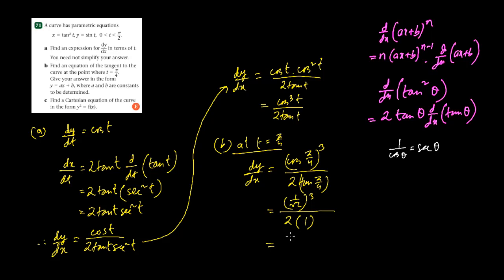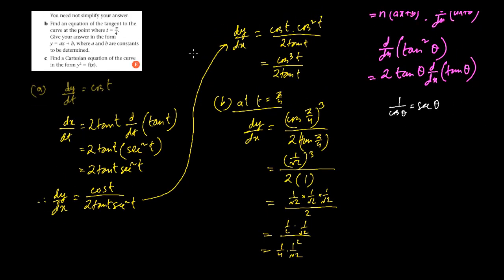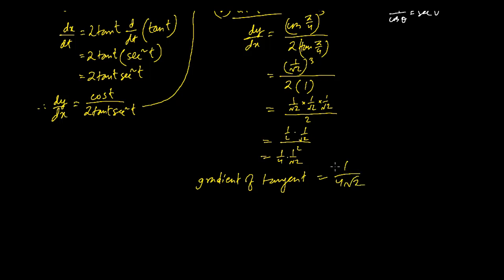So (1/√2)³ means 1/√2 × 1/√2 × 1/√2, divided by 2. Now 1/√2 × 1/√2 is 1/2, then × 1/√2, divided by 2. So this would be 1/4 × 1/√2. So the gradient of the tangent equals 1/(4√2).